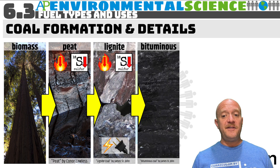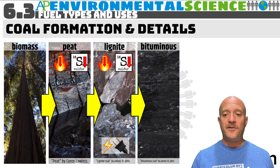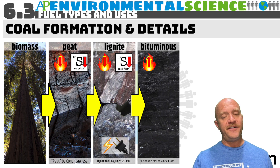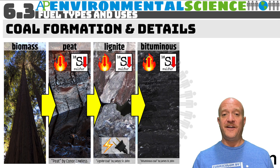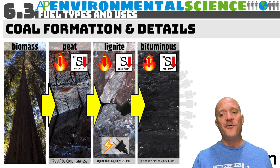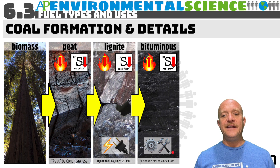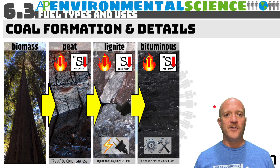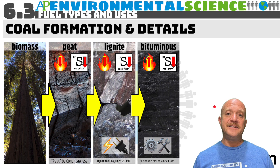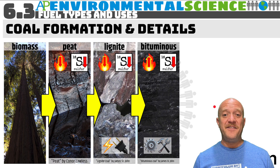If lignite sits around and gets compressed even more, you can get bituminous coal. Bituminous coal has a very high heat content and a low sulfur content. It is used predominantly for manufacturing and steel production. As we get into the more advanced, more carbon-dense forms of coal, they are not as common, and the reserves are much lower.